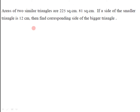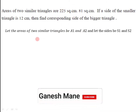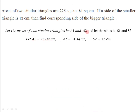As two similar triangles are given, we will define variables. Let the areas of the two similar triangles be a1 and a2, and let the sides be s1 and s2. Let a1 be the bigger triangle and a2 the smaller one. So a1 = 225 square centimeters and a2 = 81 square centimeters. Since the second triangle is smaller, s2 = 12 centimeters is the corresponding side of the smaller triangle, and we need to find s1.